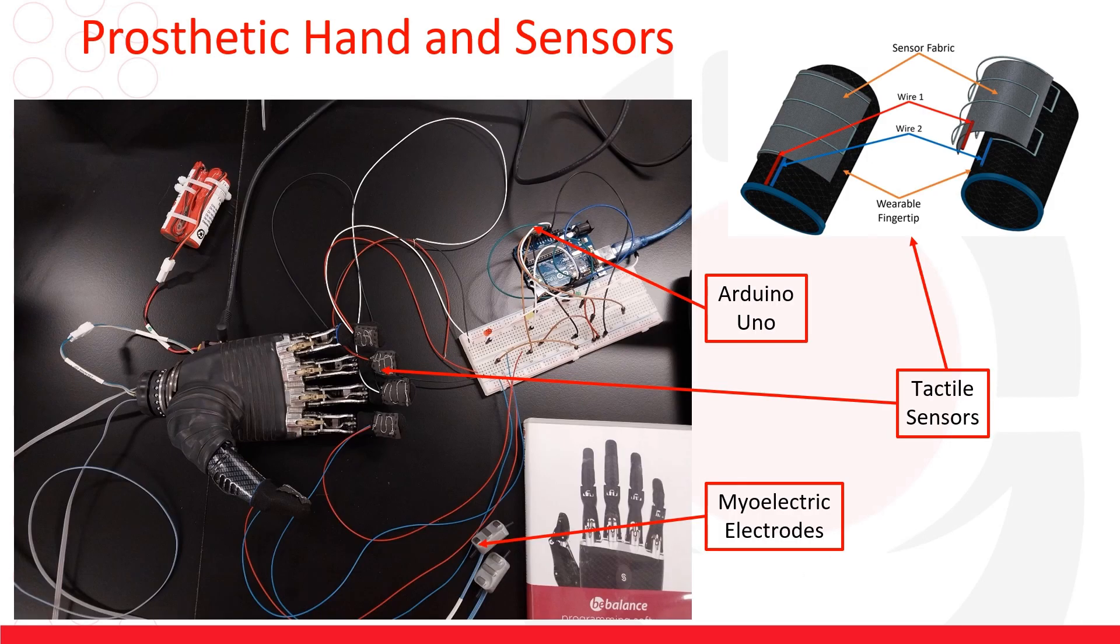This diagram shows the bionic hand that we're using and the sensors. We use the myoelectric electrodes to switch between the different grasps and we use an Arduino Uno to collect the sensor readings.